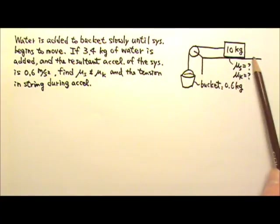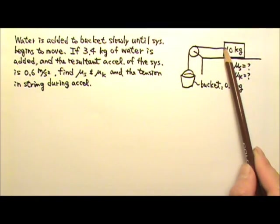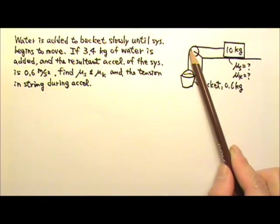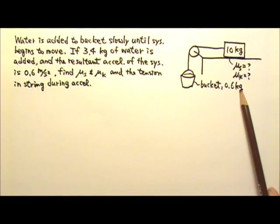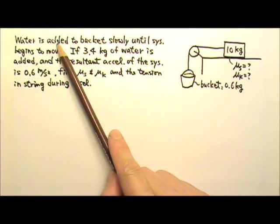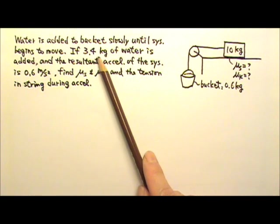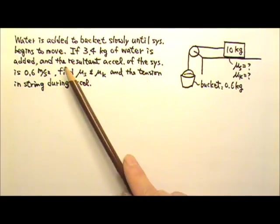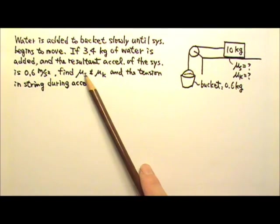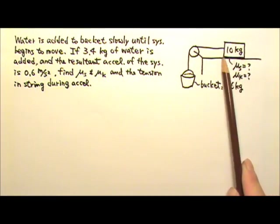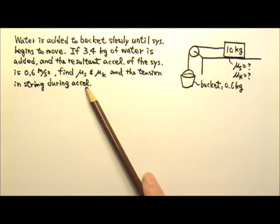In this problem, we have a table with a 10 kg box, a string attached to the box going over a pulley, and an empty bucket. The empty bucket is 0.6 kg. Water is added to the bucket slowly until the system begins to move. If 3.4 kg of water is added and the resultant acceleration of the system is 0.6 m/s², find μs and μk between the box and the table and the tension in the string during acceleration.